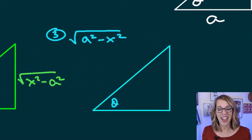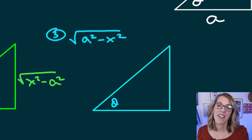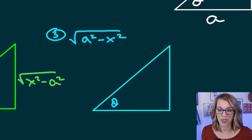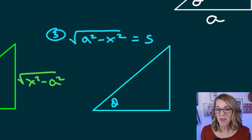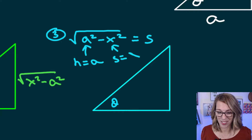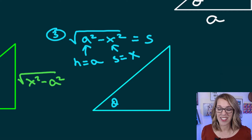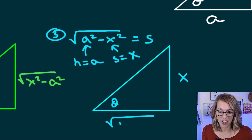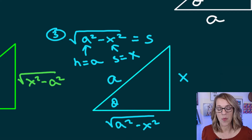Finally, example number three. In this last one, I have another difference of squares inside the square root, so that square root is one of the sides. To identify the hypotenuse — the hypotenuse is the one that comes first — so my hypotenuse is a, and that leaves x as the other side. So I've got side x, side square root of a squared minus x squared, and hypotenuse a.